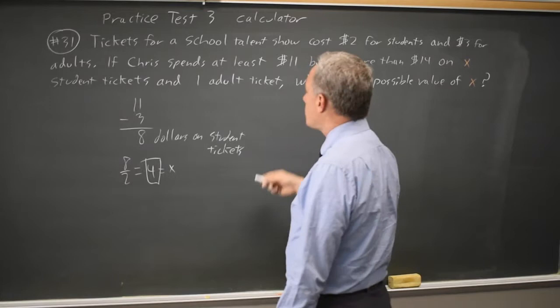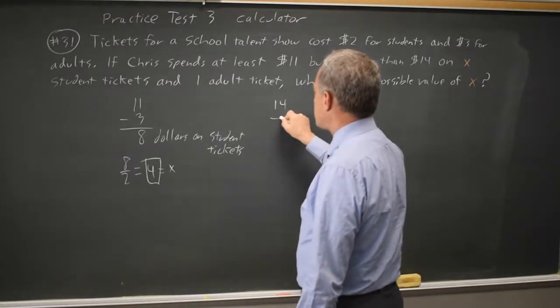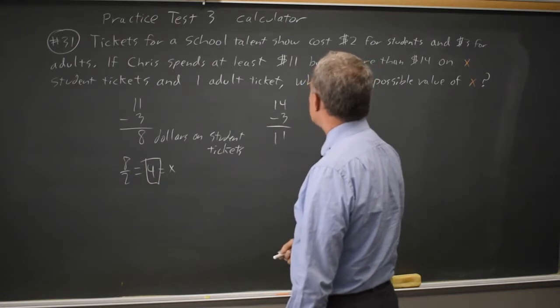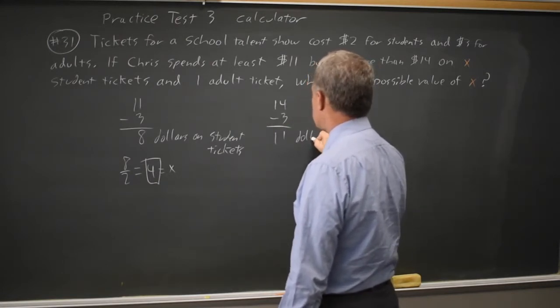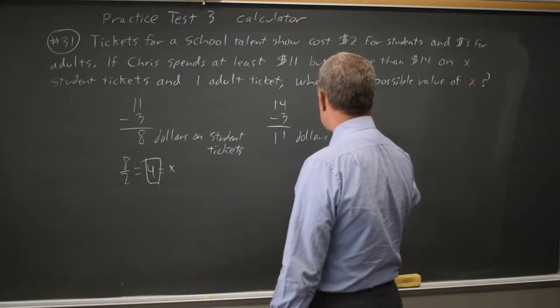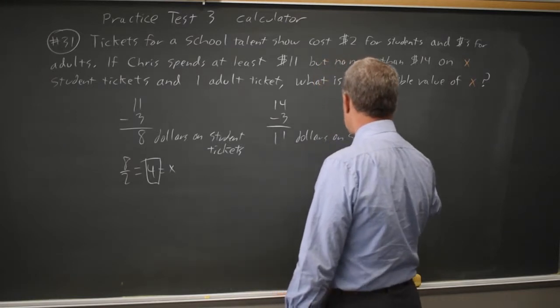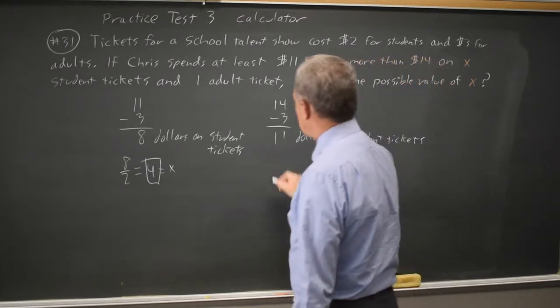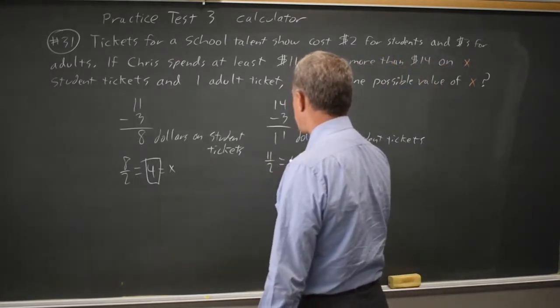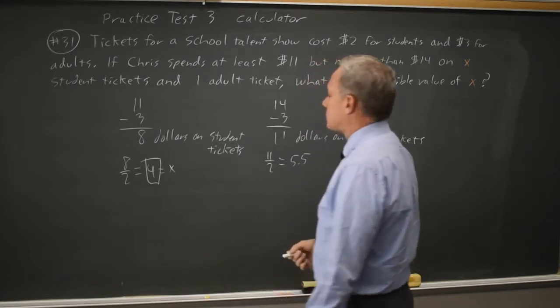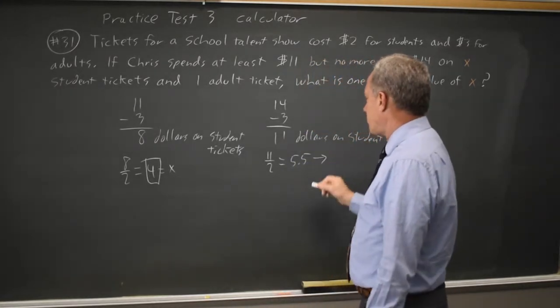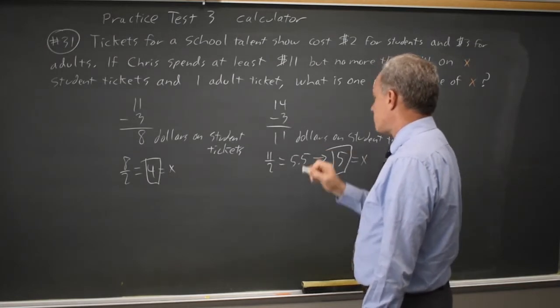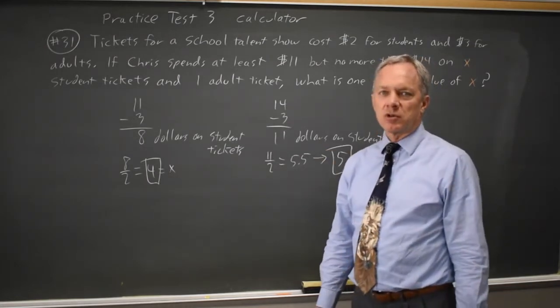If he spent no more than $14, you don't have to find this number because we already have a correct answer. He spent no more than $11 on student tickets. 11 over 2 is 5.5. Since presumably you can't buy a half ticket, that would round down to 5 student tickets for X. So the correct answers would be either 4 or 5.